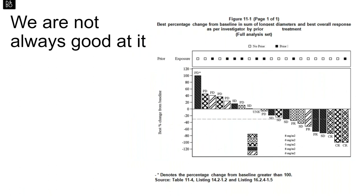We are not always good at it. On the right is an example from a clinical study report. Waterfall plots are commonly used to report treatment response in oncology clinical trials. Aesthetically, this plot doesn't look good, from the choice of patterns to the general look and feel. It feels like it was produced by a typewriter rather than modern software. But the real failing of this graph is not the look and feel — it's that the graph expects a reader to make calculations mentally to compare treatment effects across multiple doses. Waterfall plots are often used to support decision making in oncology, so asking the reader to make those calculations mentally isn't an effective way to communicate.